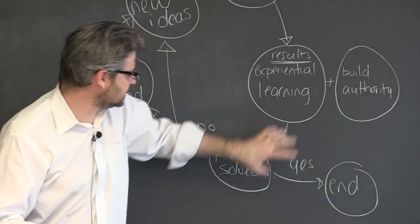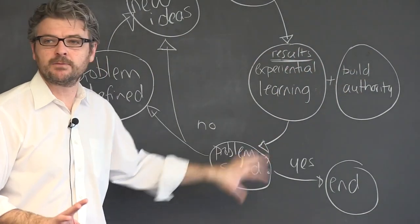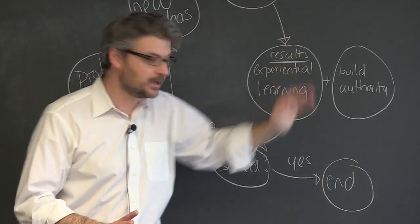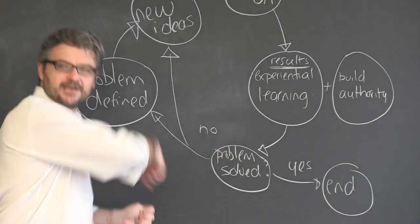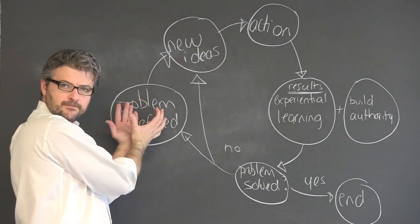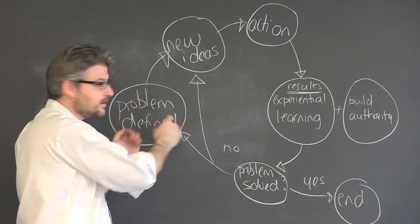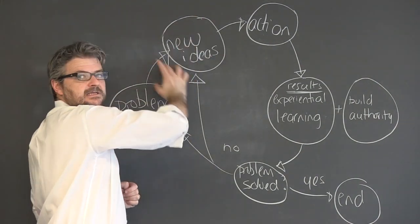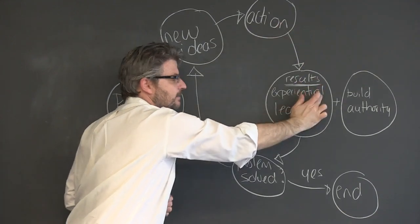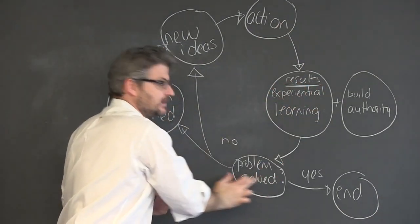We then move into a discussion about, well did what we do solve the problem? And if the answer is yes then we don't have to iterate again because we have completed our task. But if the answer is no we go back into a second iteration, which may involve redefining the problem again based on the new information we have or it may just involve establishing a new set of ideas and then going straight back into action again, back into our experiential learning and then asking the question.